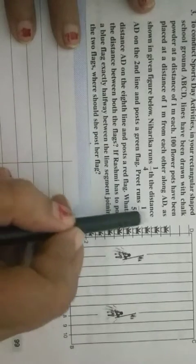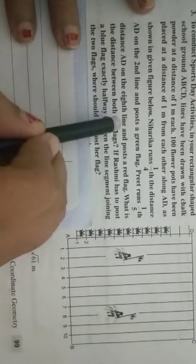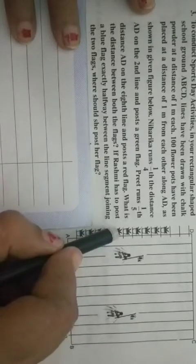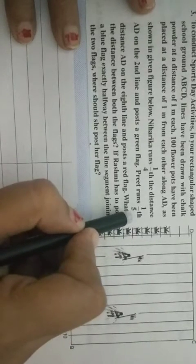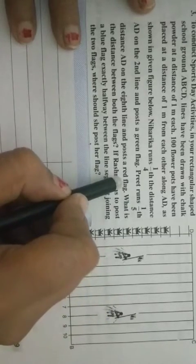Preet runs 1 fifth of the distance AD at the 8th line. 8th line means X coordinate 8. And Y coordinate? 1 fifth. 100 multiplied by 1 fifth. And she has red flag.